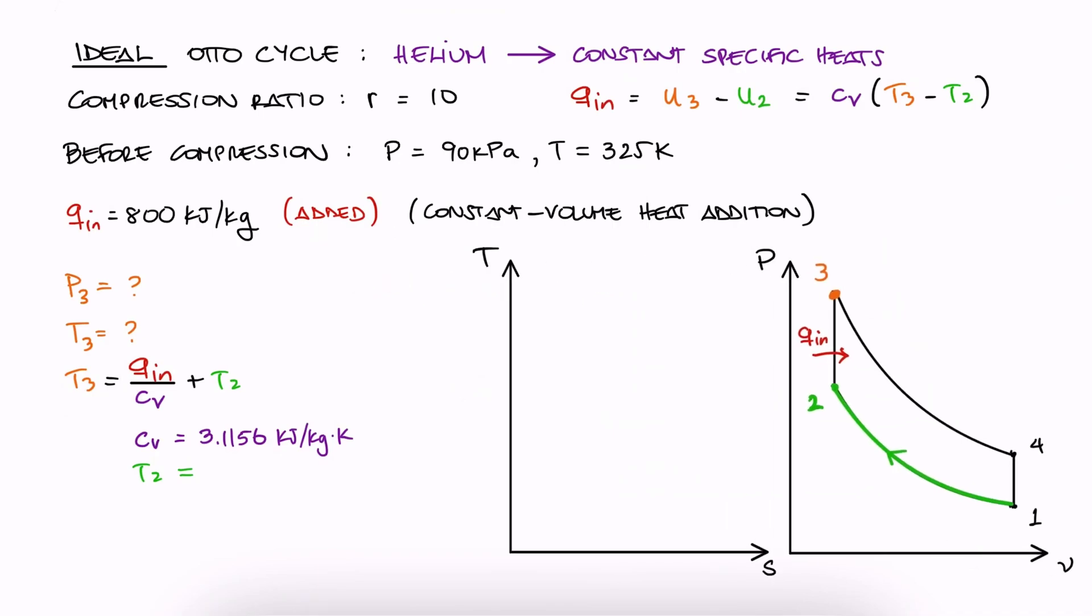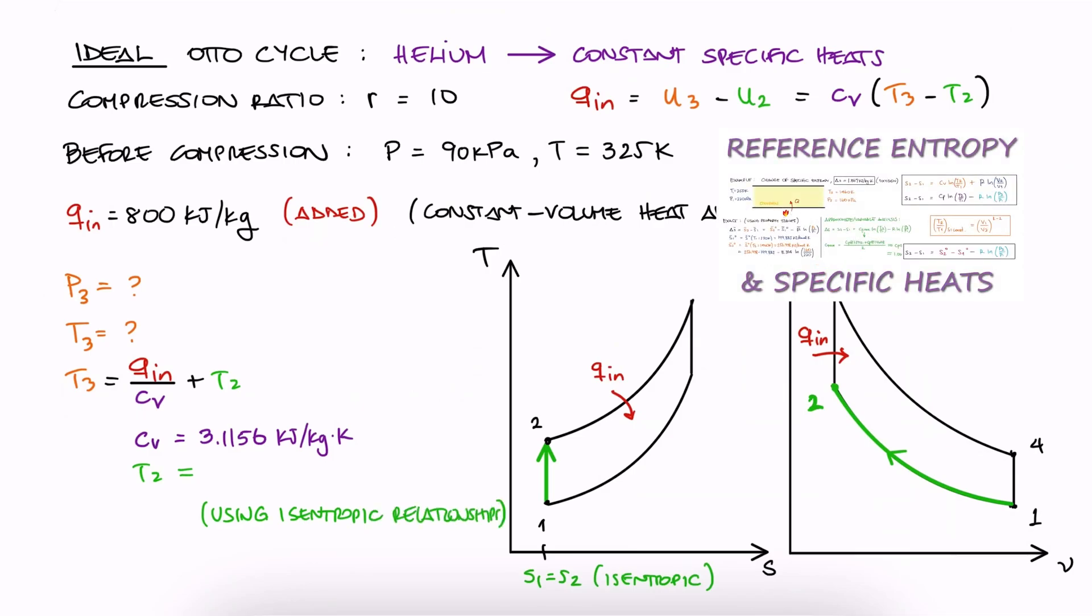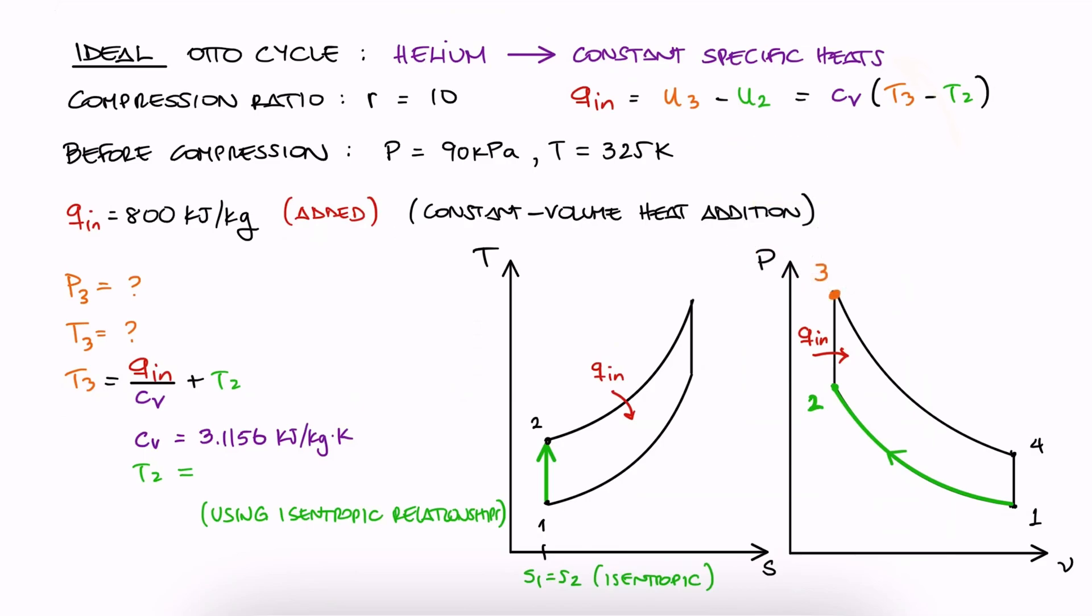Since from 1 to 2 we have an isentropic compression, we can use the isentropic relationships we derived in the reference entropy 12-minute lecture, link below. And since helium has constant specific heats, we can use the then labeled approximate analysis.